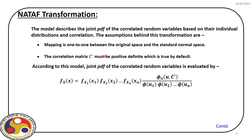The description of the Nataf model goes like this. On the left-hand side we have the joint distribution, and on the right-hand side we have the marginals of x1, x2 up to xn, multiplied by the expression for joint distribution in standard normal space divided by the marginals in standard normal space. For every xi we have a ui. Please note that ui represents the standard normal variable — in some literature u is used for standard normal variable, as I use it here.